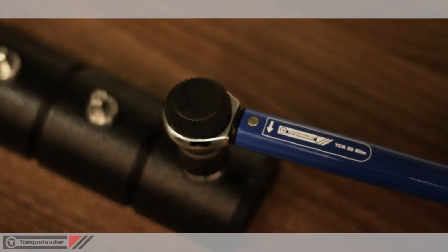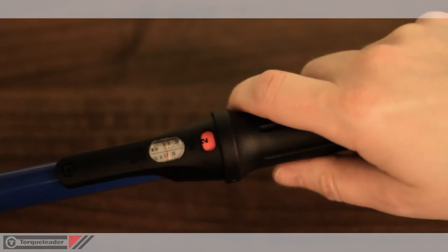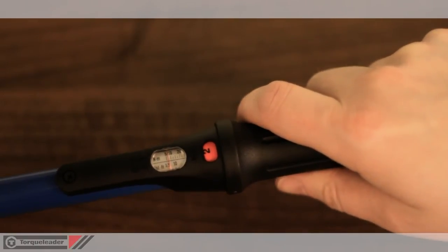Clicker wrenches indicate that the set torque has been reached through both an audible click and an impulse felt by the user. Typically clicker wrenches break over at about one degree of movement.